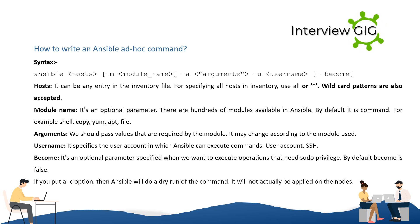Hosts: it can be any entry in the inventory file. For specifying all hosts in inventory, use 'all' or '.'; wildcard patterns are also accepted. Module name is an optional parameter — there are hundreds of modules available in Ansible, and by default it is 'command'. For example: shell, copy, yum, apt, file. Arguments: we should pass values that are required by the module; it may change according to the module used. User name specifies the user account in which Ansible can execute commands via SSH. Become is an optional parameter specified when we want to execute operations that need elevated privilege — by default, become is false. If you use the -C option, Ansible will do a dry run of the command and it will not actually be applied on the nodes.